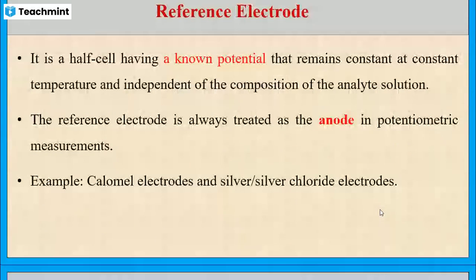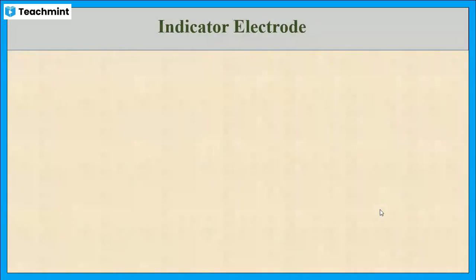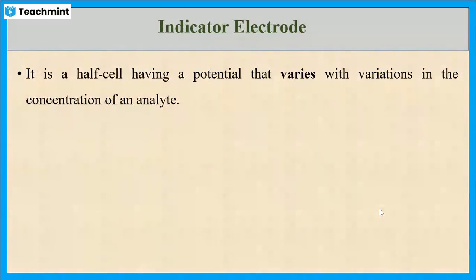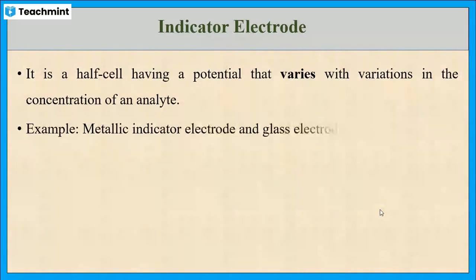Next, let us see what is an indicator electrode. It is an electrode having a potential that varies with variation in the concentration of an analyte. That means, as concentration changes, potential also changes. An example is a metallic indicator electrode, like a platinum electrode or a glass electrode.